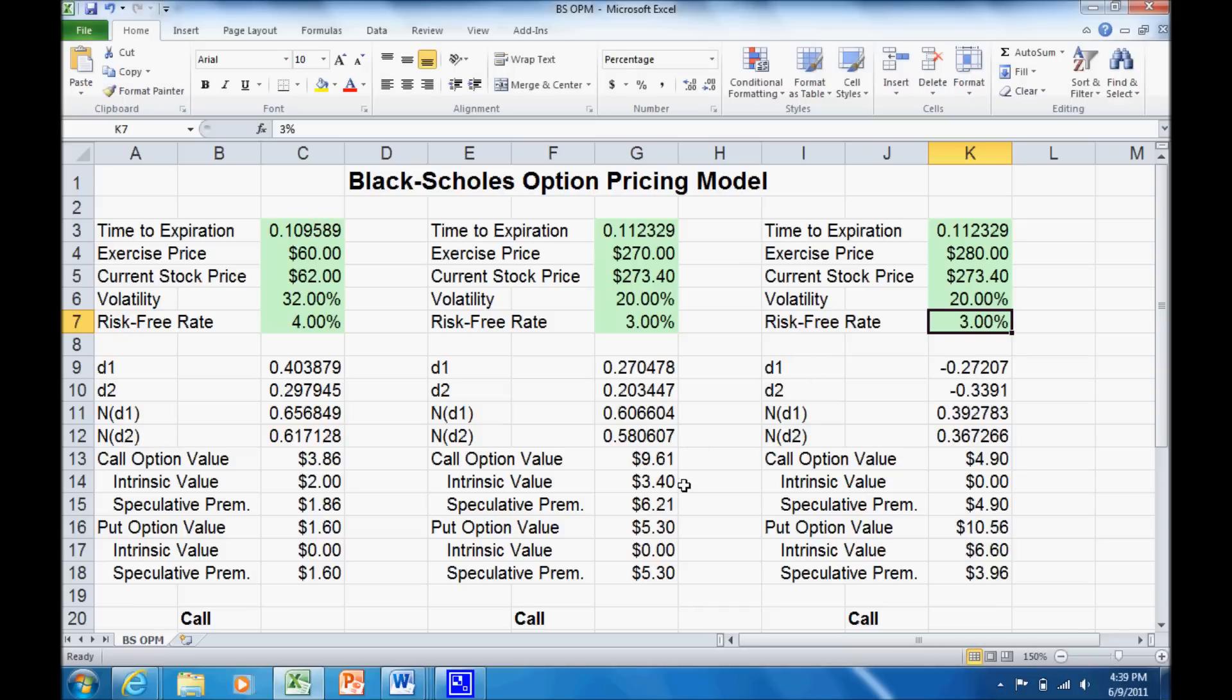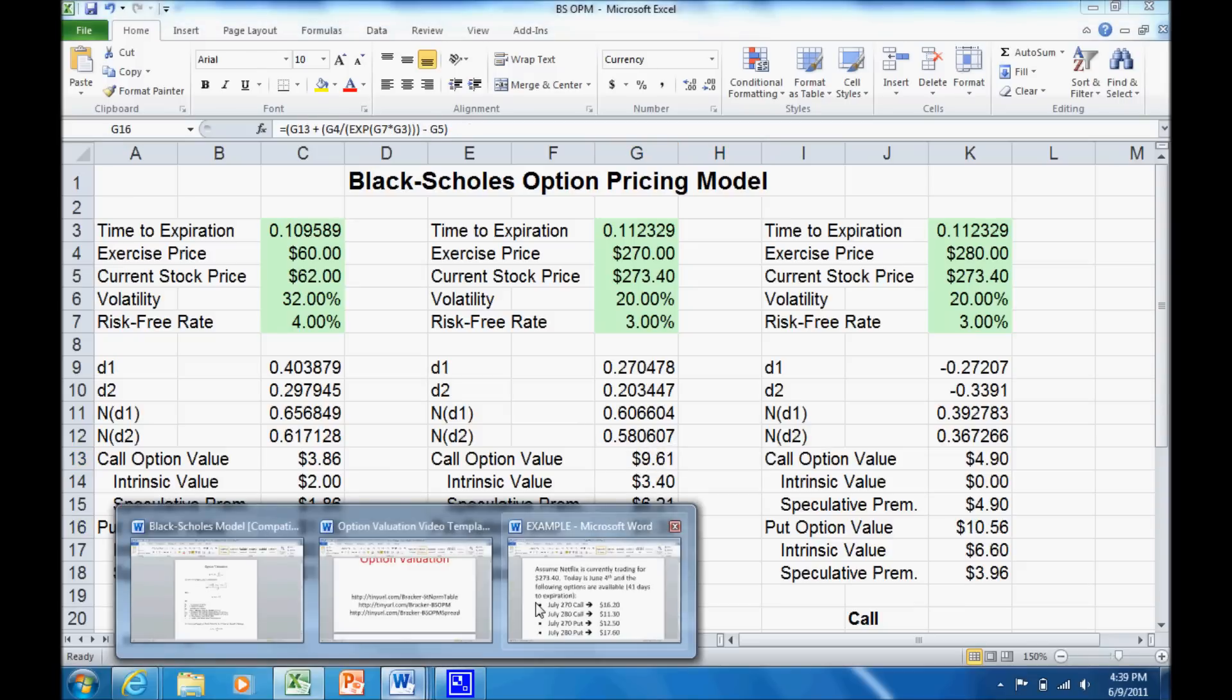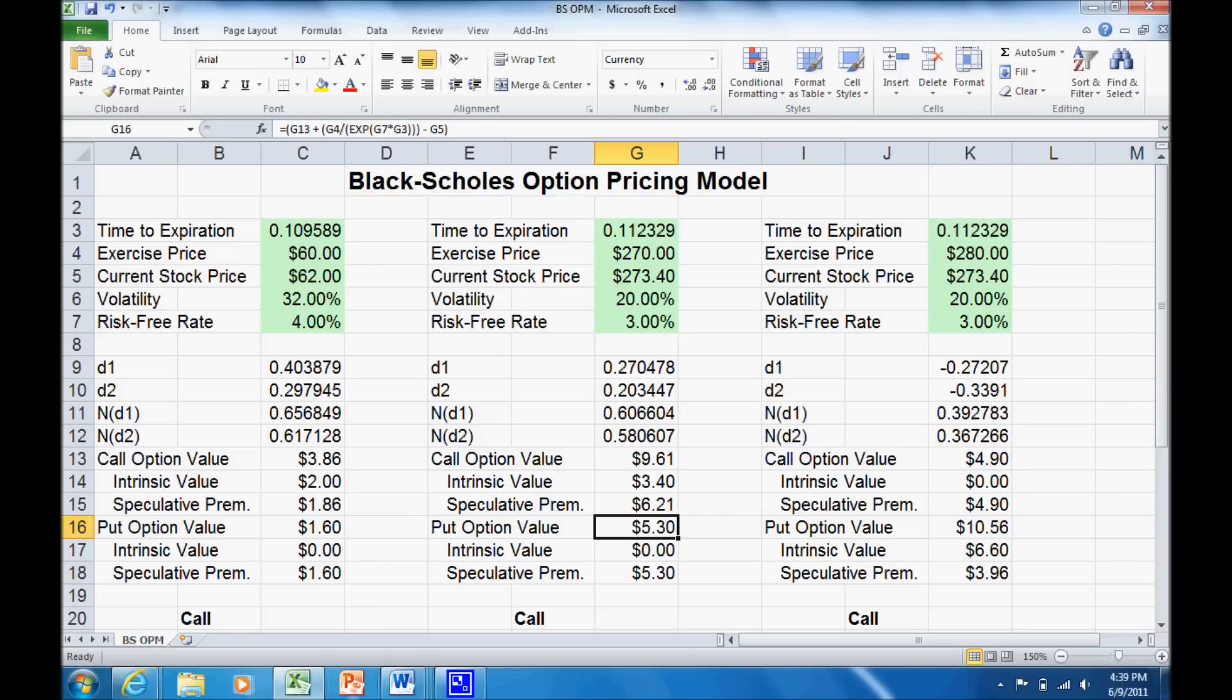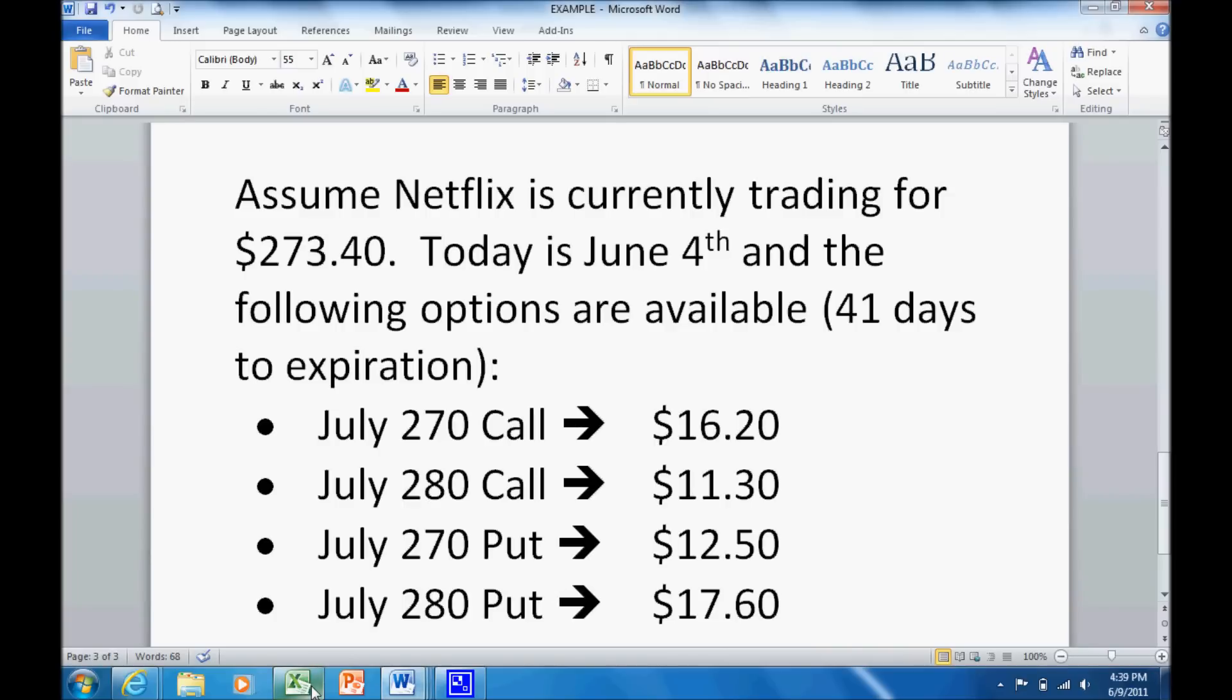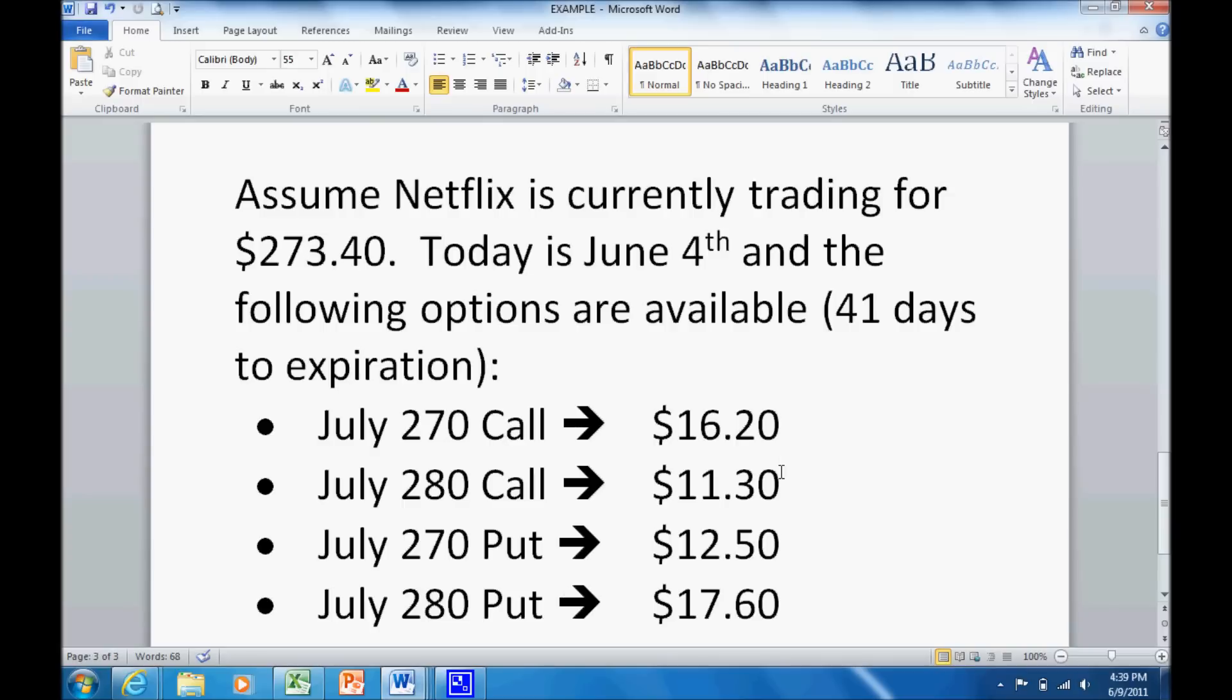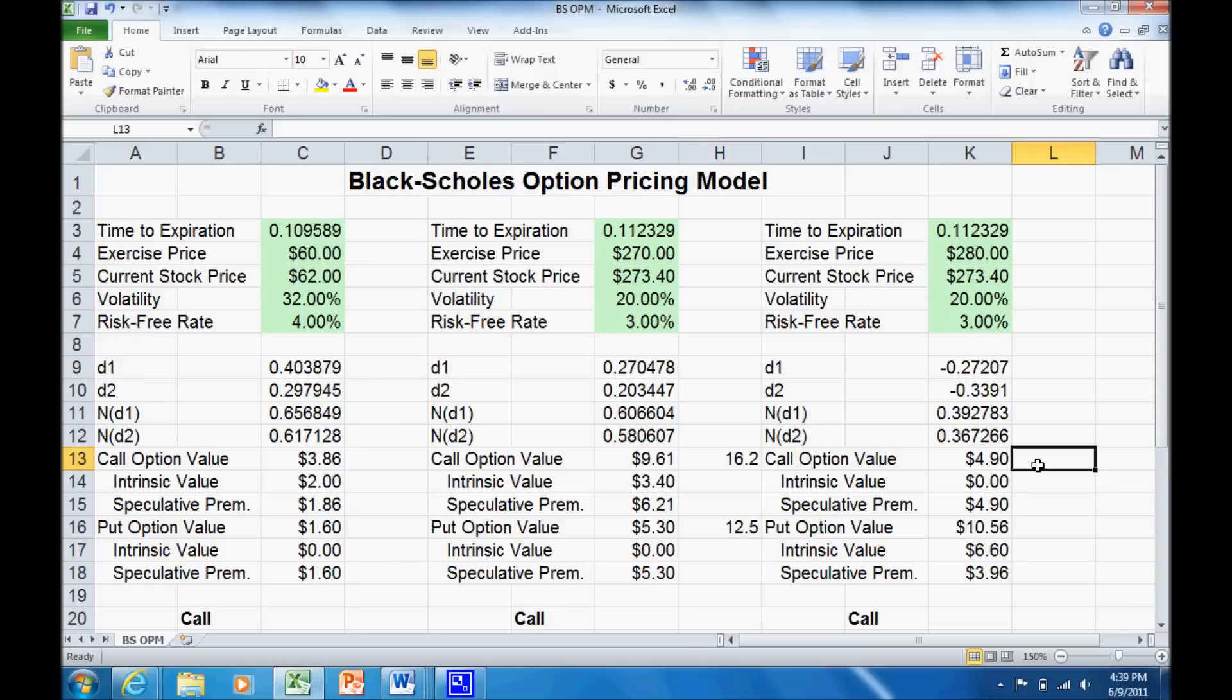Plug that in for both of our options. You can see the 270 strike option should have a call option value of 961 and 530. In our example, the 270 call was 1620 and the 270 put was 1250. So let's go back and write those in. The 280 options had a value of 1130 and 1760. So let's plug those in. You can see we're pretty far off on the value.